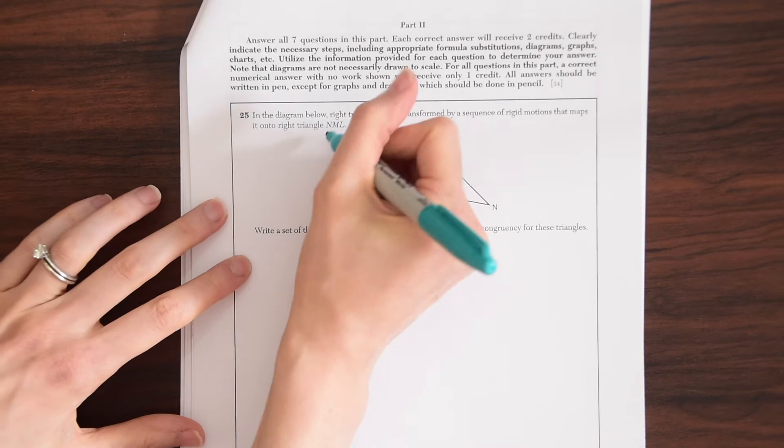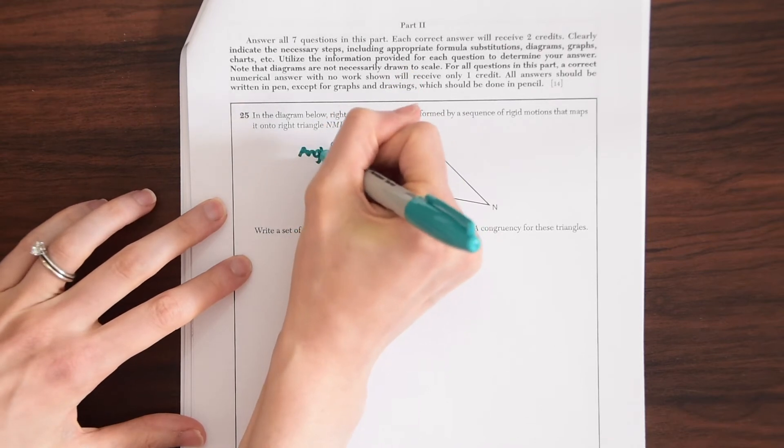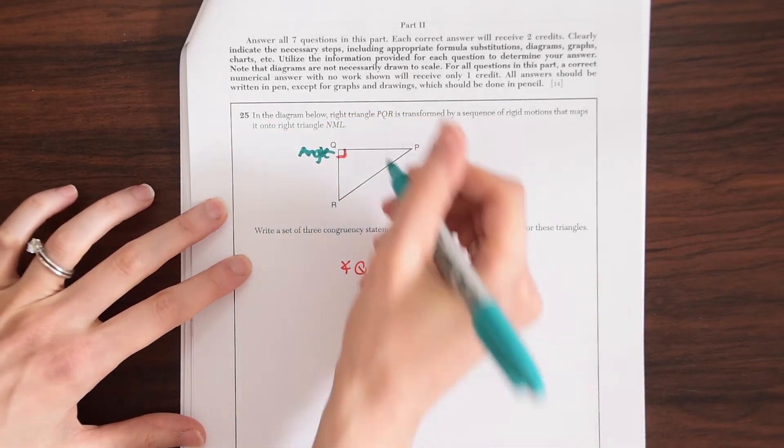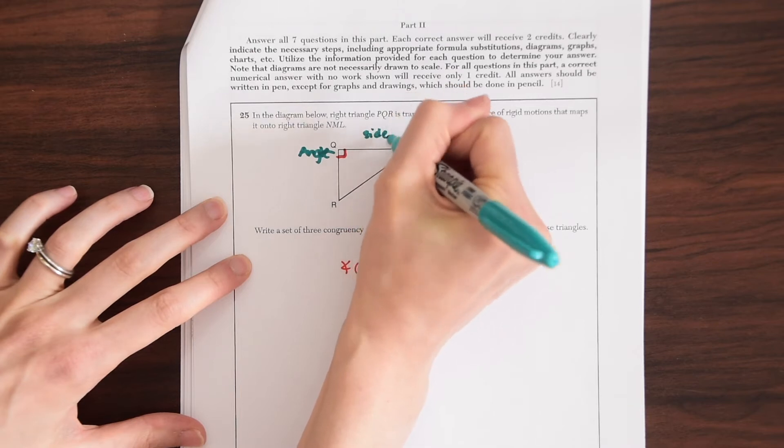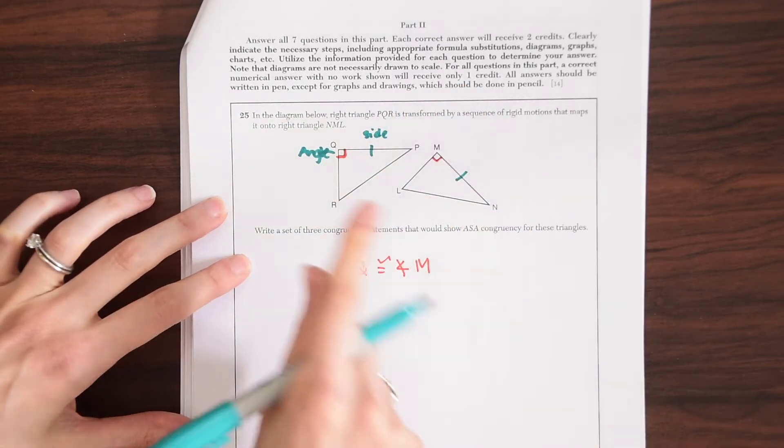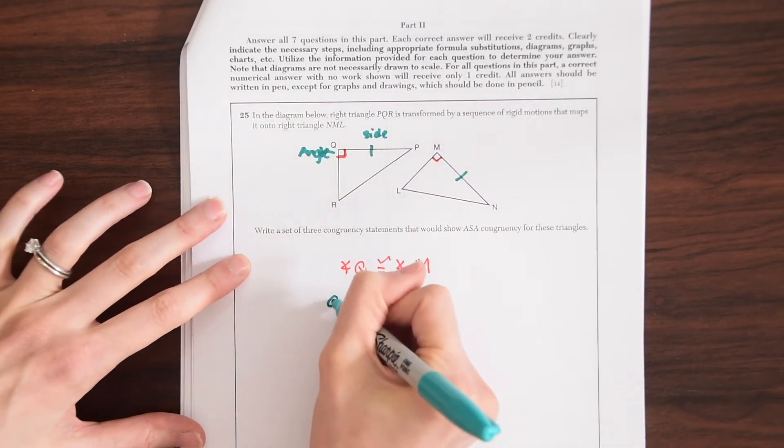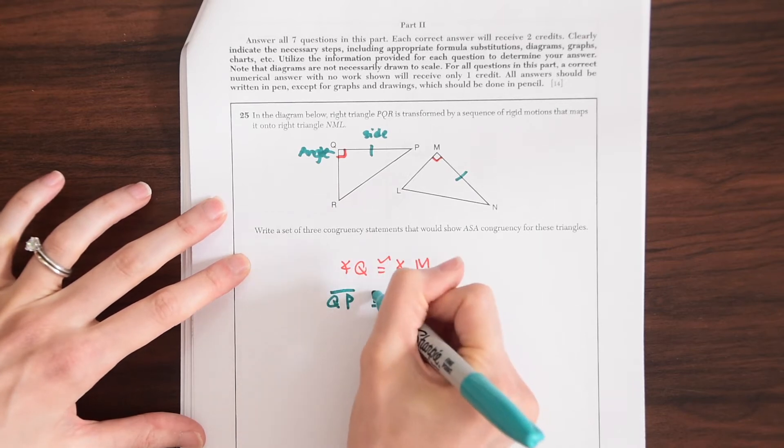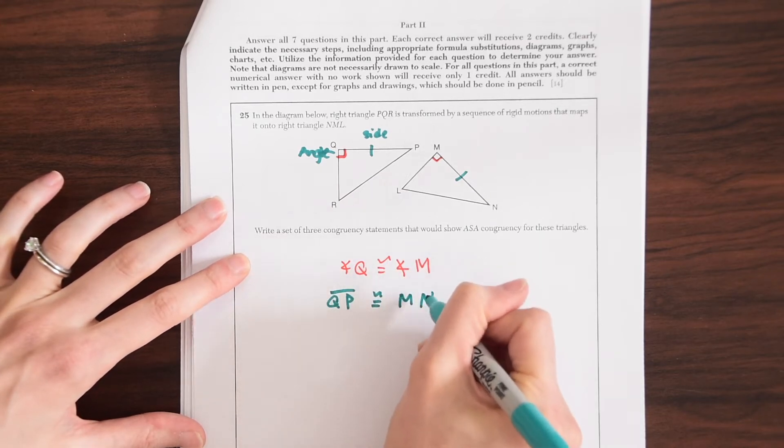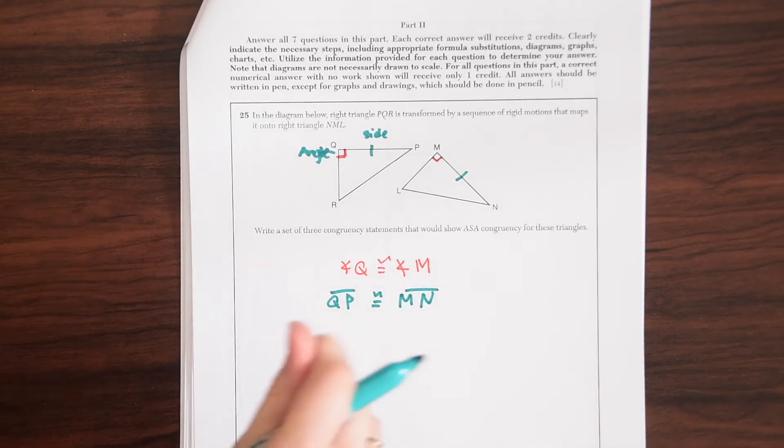Next we're gonna need a side, right? This was our angle. Now we're gonna need a side. So we can say that side QR is congruent to side MN and then we're gonna need another angle, right?